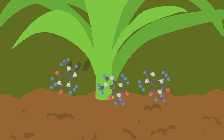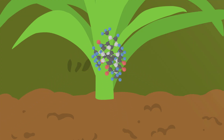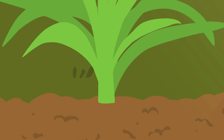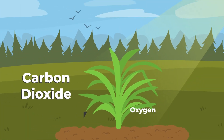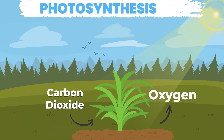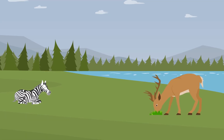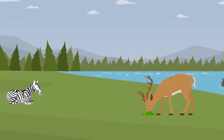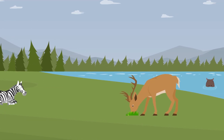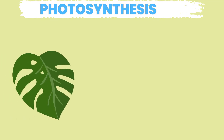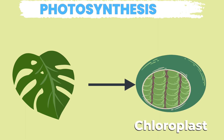Plants use glucose as their major source of food and exchange oxygen with carbon dioxide in a process called respiration. Animals and other consumers cannot make their own food through photosynthesis because they're missing an important organelle called chloroplast, where photosynthesis happens.